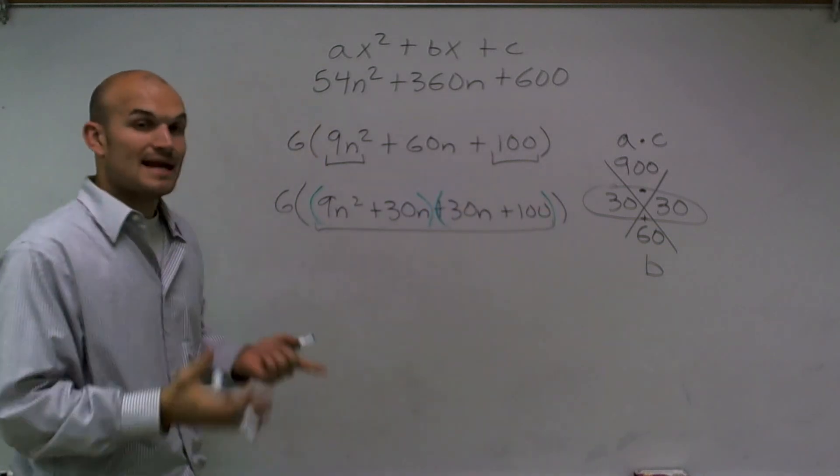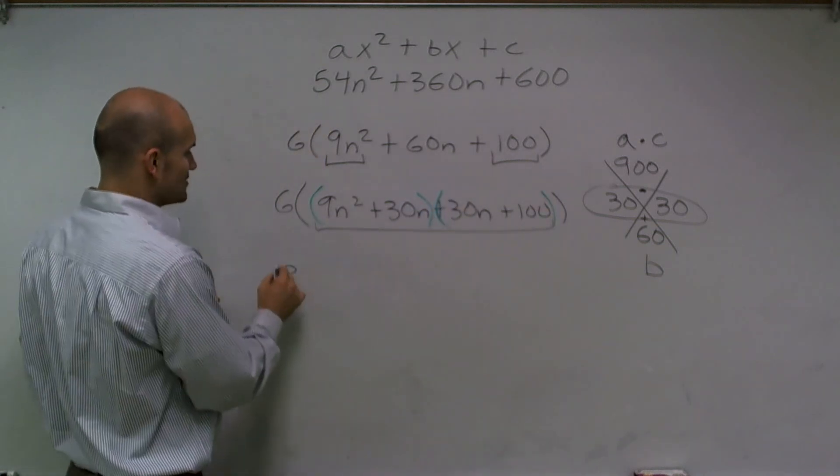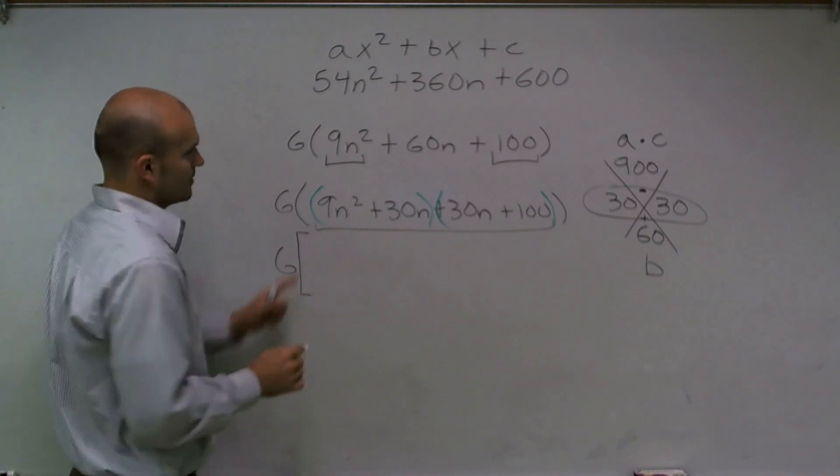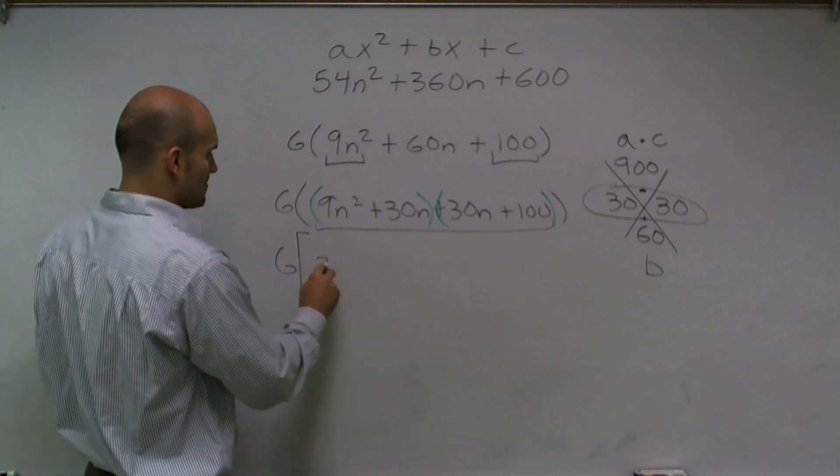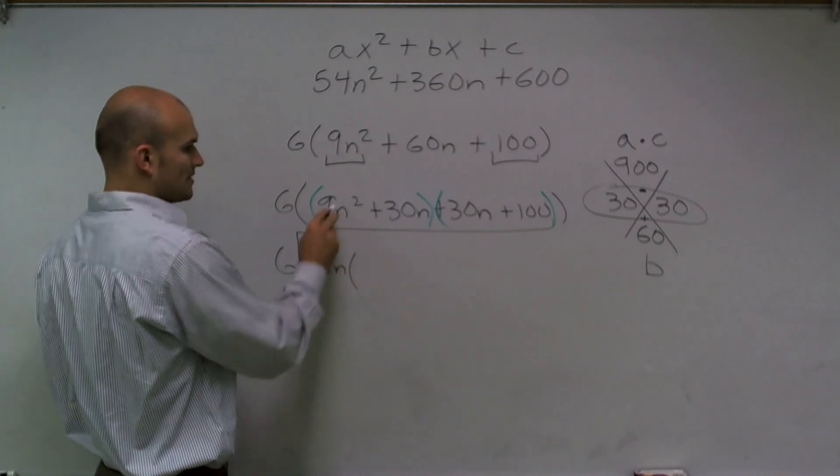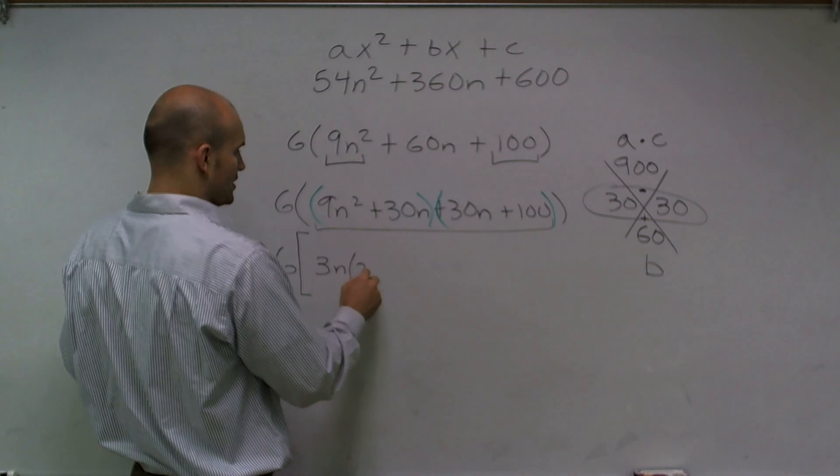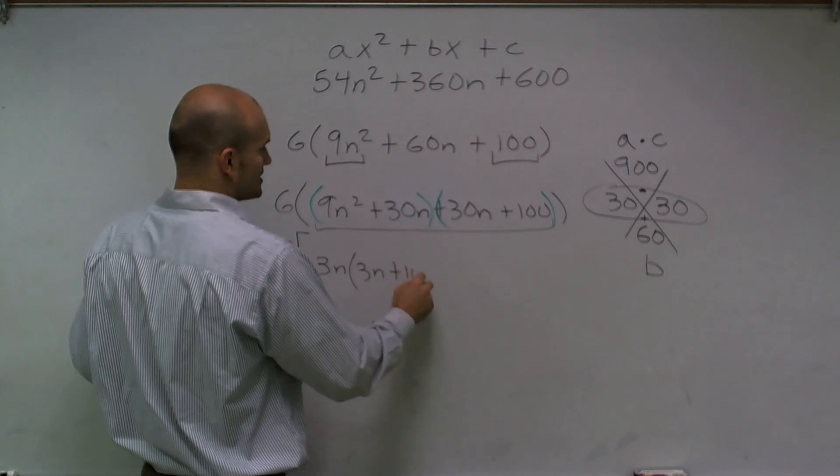Now what I'm going to do from here is factor out what I can for my first two terms. Well here I can factor out a 3n. When I factor out a 3n, I'm just left with another 3n plus 10.